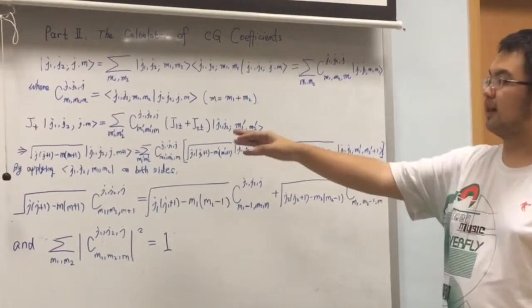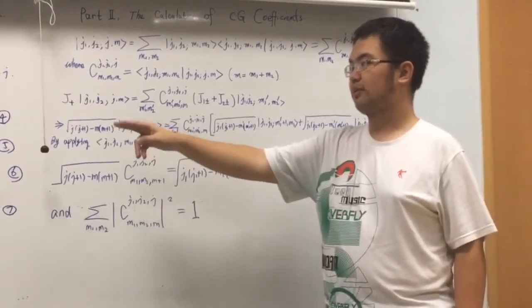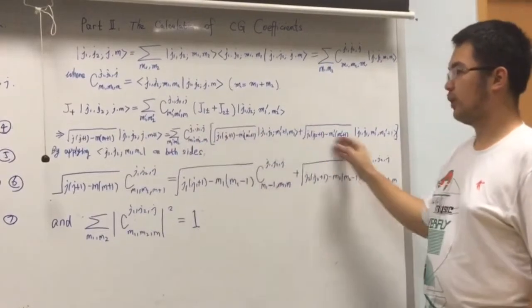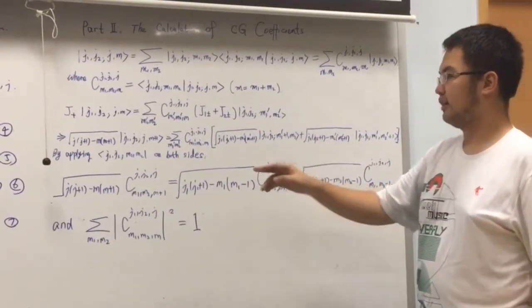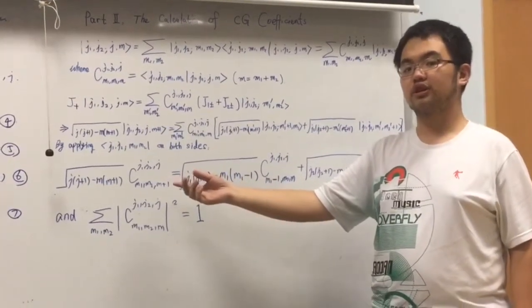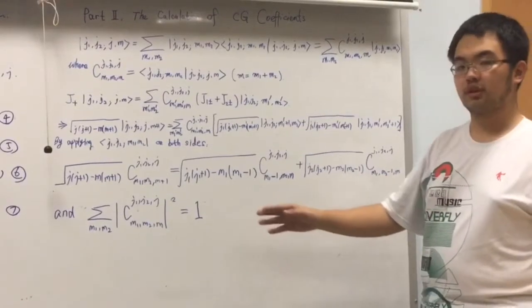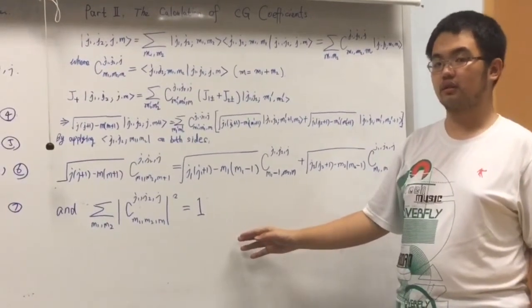By applying the J plus, using the relationship we got before, we can get this equation, and by applying this bra on both sides, we can get the exact recursion relationship of CG coefficient, and the normalization convention of the coefficients.